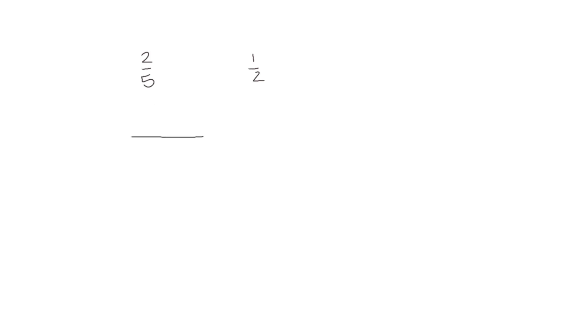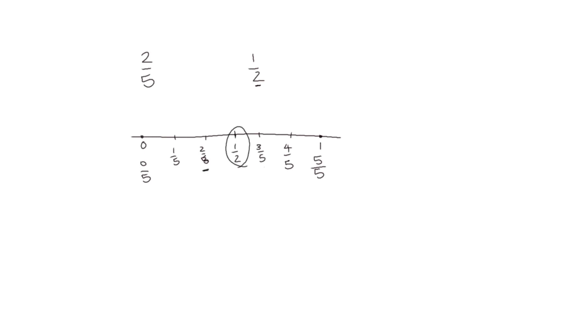How about two fifths comparing it to one half? Well, five is odd, so we can't divide evenly by two, but if I think of a number line that starts with zero — zero fifths — and goes to one, which would be five fifths, then one half is going to be in the middle. And if we divide this into fifths — one fifth, two fifths, three fifths, four fifths — so one half is going to be somewhere between two fifths and three fifths. So if that's the case, then two fifths has to be less than one half.